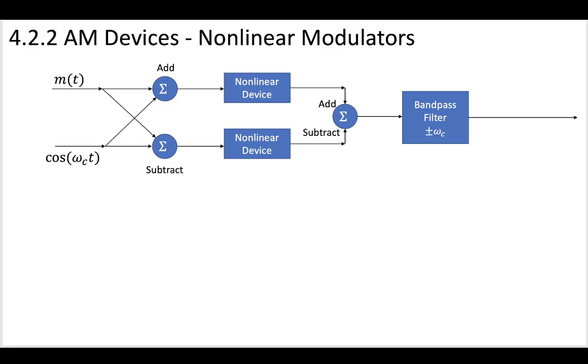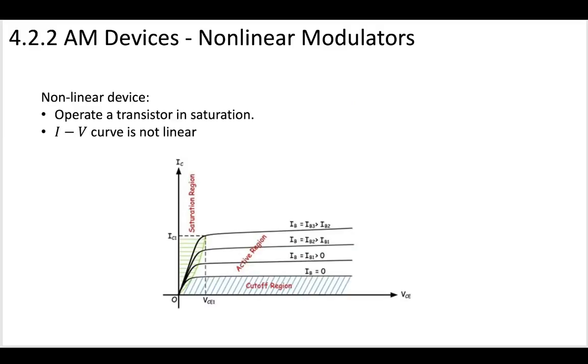Now recall, what is a nonlinear device? If you think of a transistor, we talked about many different regions that you can operate your transistor in. You should remember that when you have a nonlinear device, that's basically any time when your IV curve is not linear. You could bias it in such a way that you operate it in the saturation region. This diagram explains the different ways you can operate a transistor, and if you operate it in that saturation region, you'll have some nonlinearities in your IV curve.